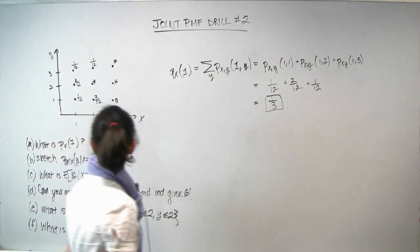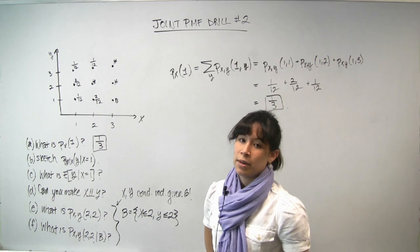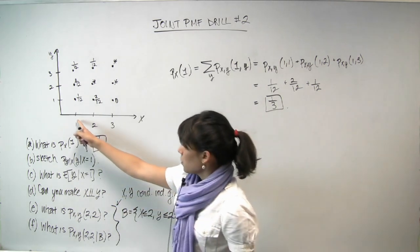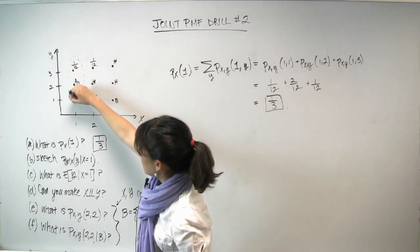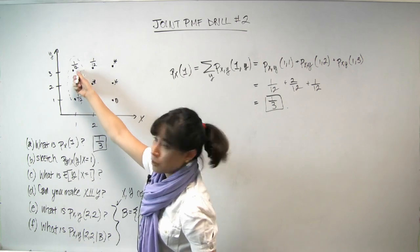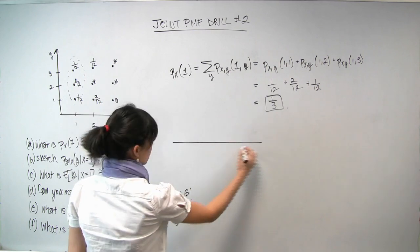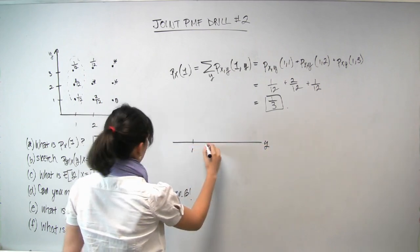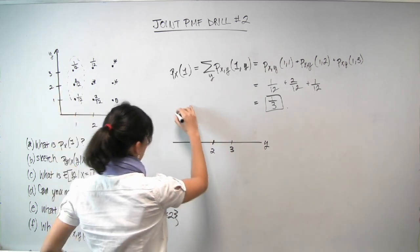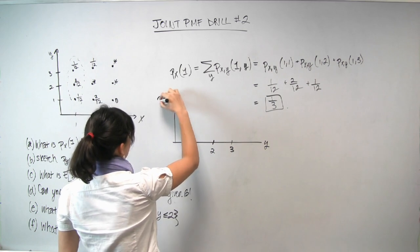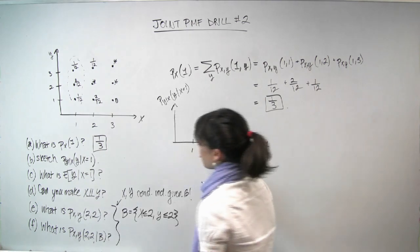So for part B, conditioning on X is equal to 1, we want to sketch the PMF of Y. So if X is equal to 1, we are suddenly living in this universe. Y can take on values of 1, 2, or 3 with these relative frequencies. So let's draw this here. So this is Y. I said already Y can take on a value of 1, Y can take on a value of 2, or it can take on a value of 3. And we're plotting here P Y given X, Y condition on X is equal to 1.